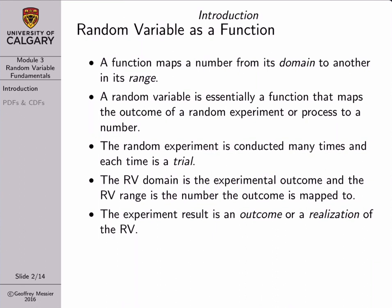The outcome of a random experiment isn't always numerical. For example, if we flip a coin, we get heads or tails. But the purpose of a random variable is to take whatever the outcome of the experiment is and map it to a number. We assume that this experiment is conducted many times, and each time the experiment is conducted we refer to it as a trial. Thinking of a function as mapping something from its domain to its range, the domain of a random variable is the outcome of the experiment, and the range is some numerical value. Each experimental result is referred to as an outcome, and it also corresponds to a single realization of the random variable.